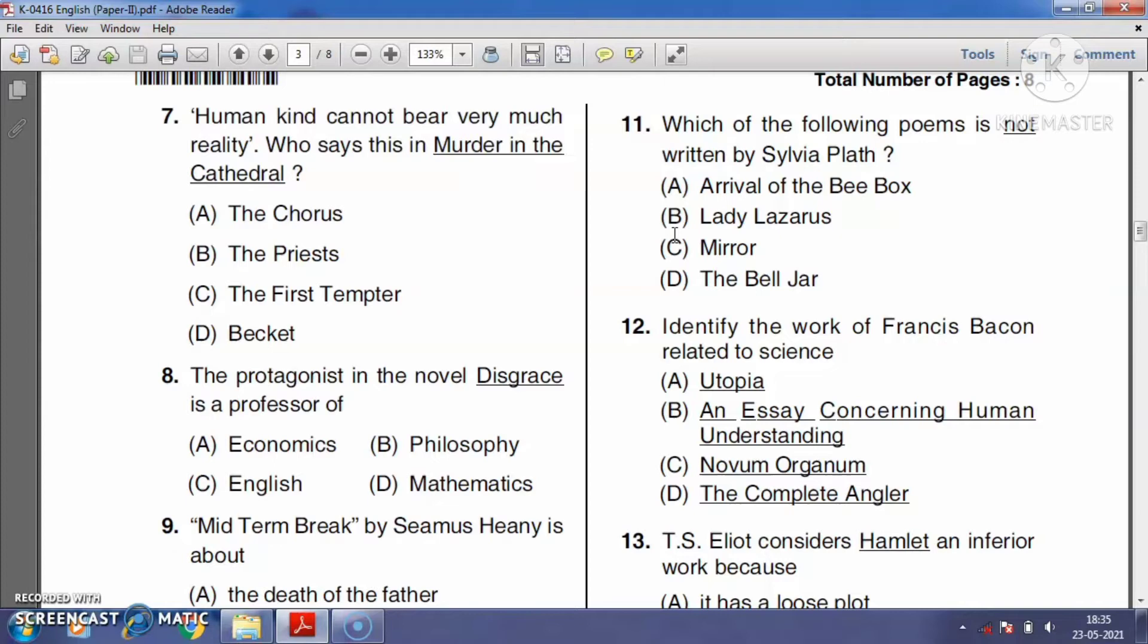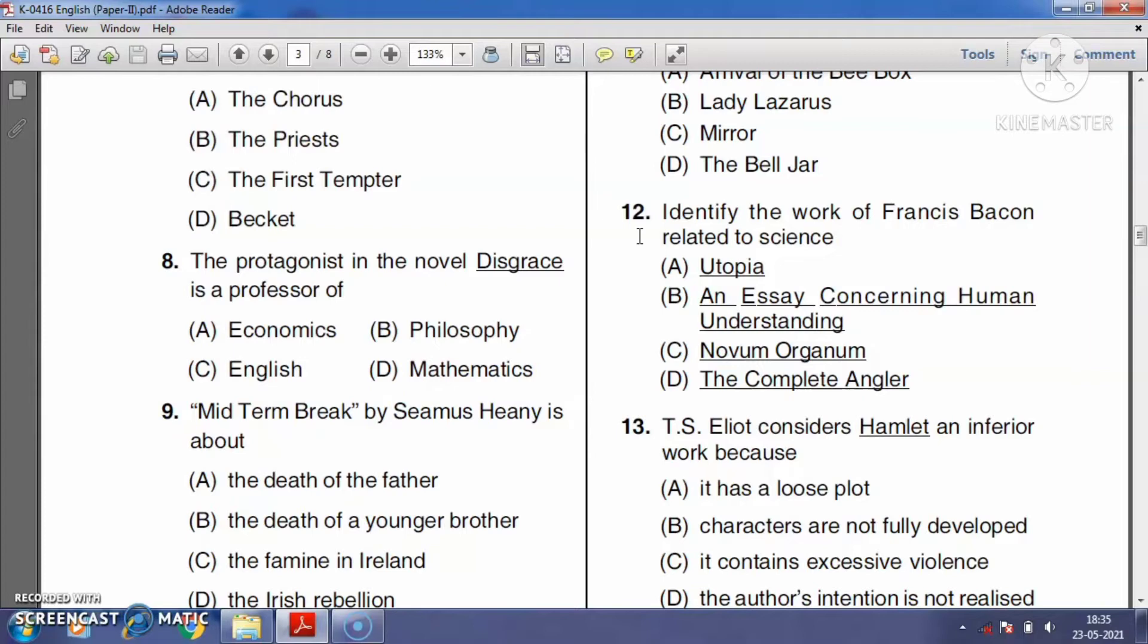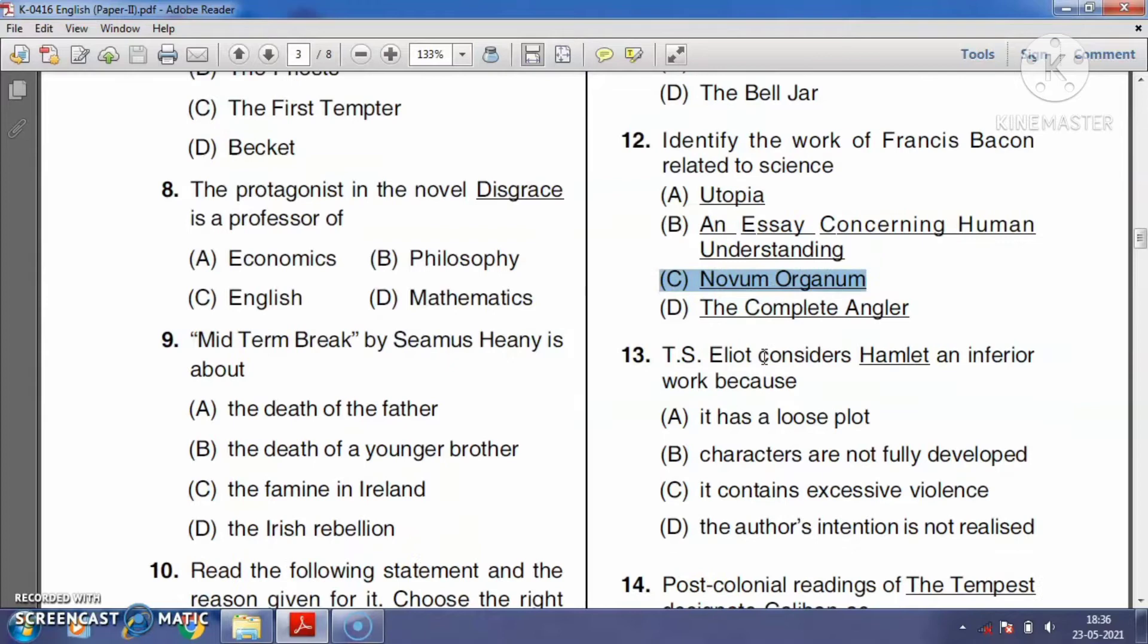Question number twelve: Identify the work of Francis Bacon related to science. Utopia, An Essay Concerning Human Understanding, Novum Organum, or The Complete Angler? The Novum Organum is a philosophical work by Francis Bacon, published in 1620. The title refers to Aristotle's book Organon, which is a treatise on logic and syllogism. So the right answer is option C, Novum Organum.